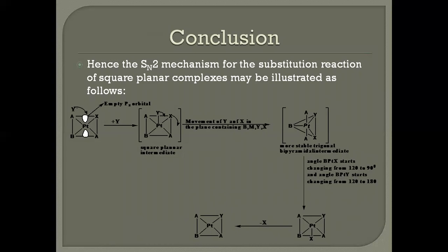If you examine this reaction, X is trans to B in the starting complex, and Y is also trans to B in the product. This means such reactions are stereospecific — a cis complex will always give a cis product, and a trans complex will always give a trans product. This is one example of a stereospecific reaction. That is how we understand the mechanism of square planar complexes, which proceeds through an SN2 mechanism.